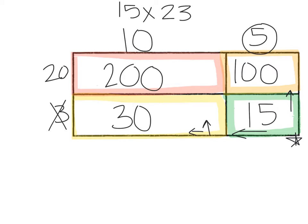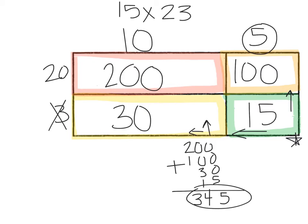All you have to do from there is just add all of those up. I like to start with my biggest numbers and then work my way down: 200, 130, and 15. Then you're going to have a 5 in the ones, a 4 in the tens, and then 2 and 1 gives you 3. So 15 times 23 is 345.